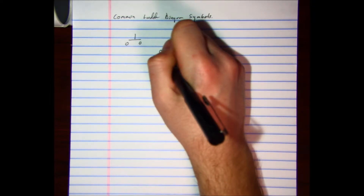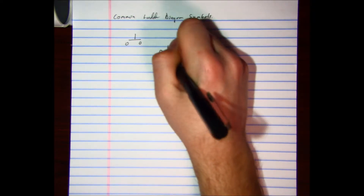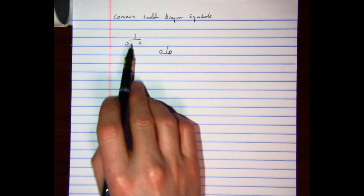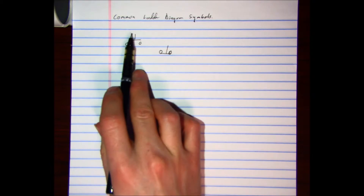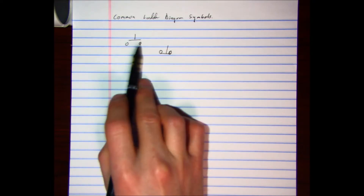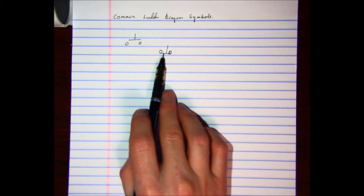The next one you would see is a normally closed button, and it'd be drawn like this. Notice the difference: on the normally open, the line is on top of the two contacts and it's not connected. On the normally closed, the line is connected and it is at the bottom of the two contacts.